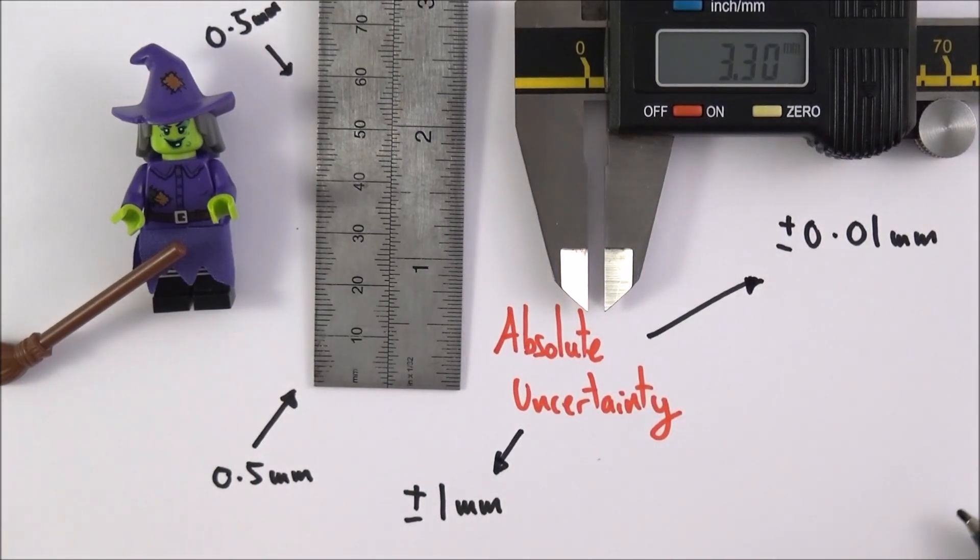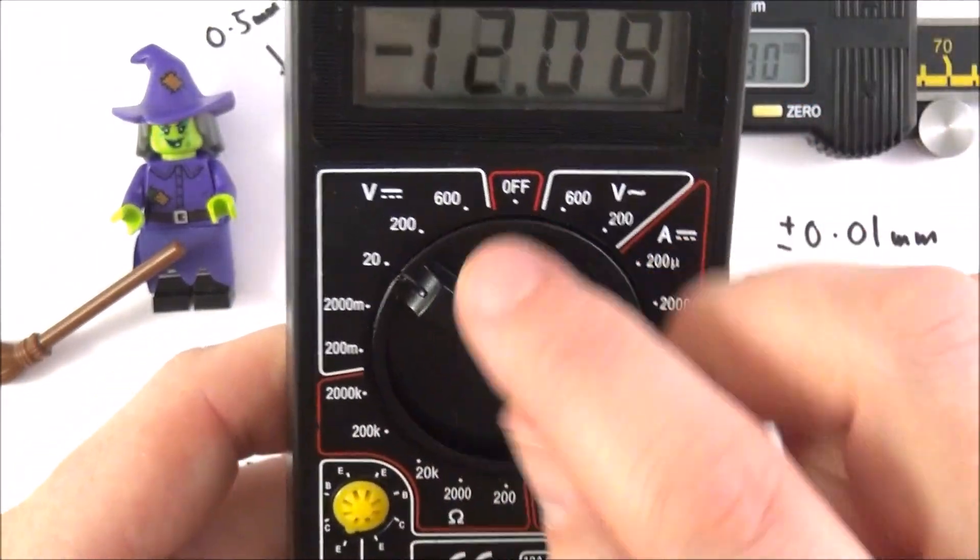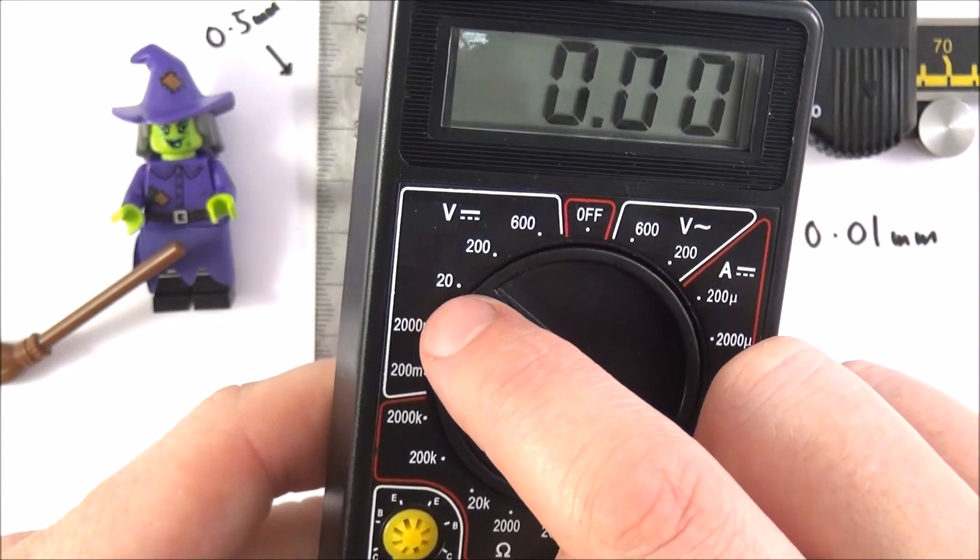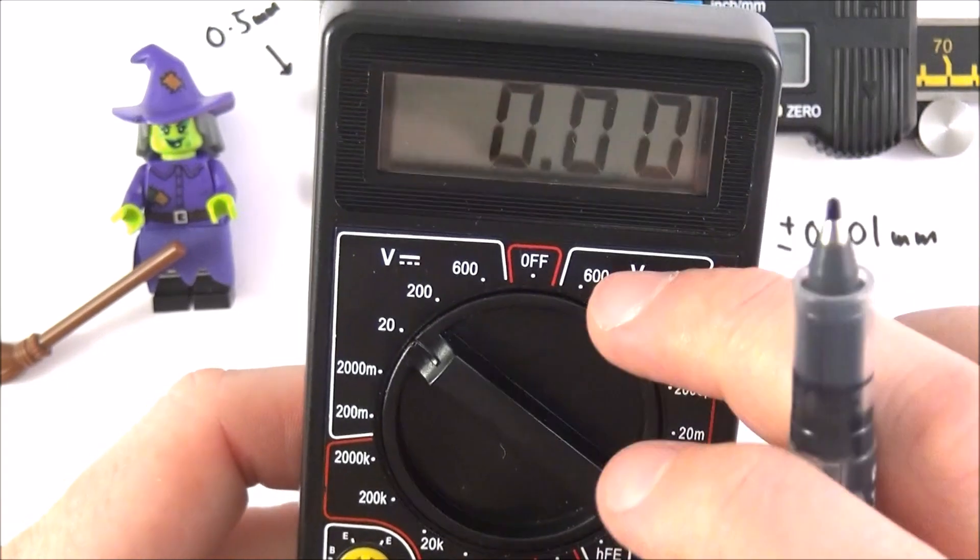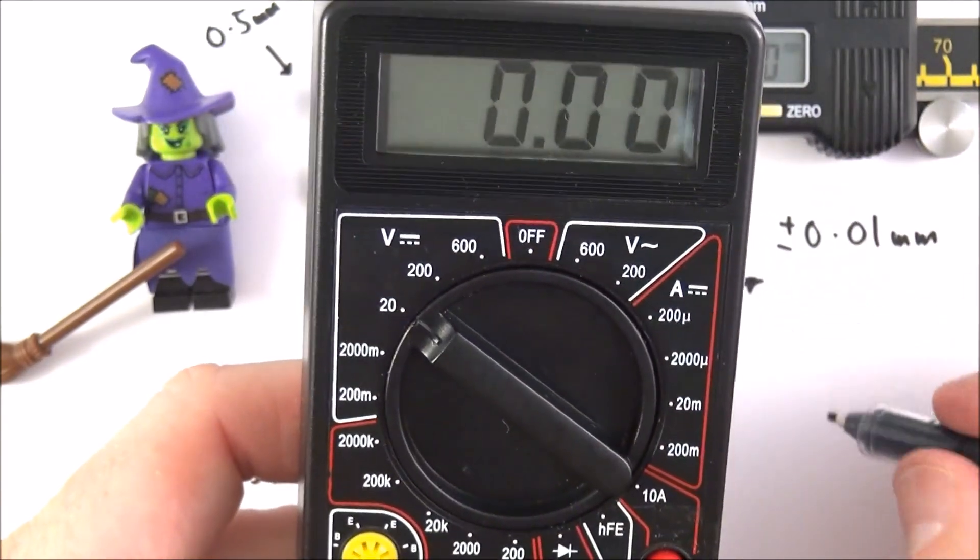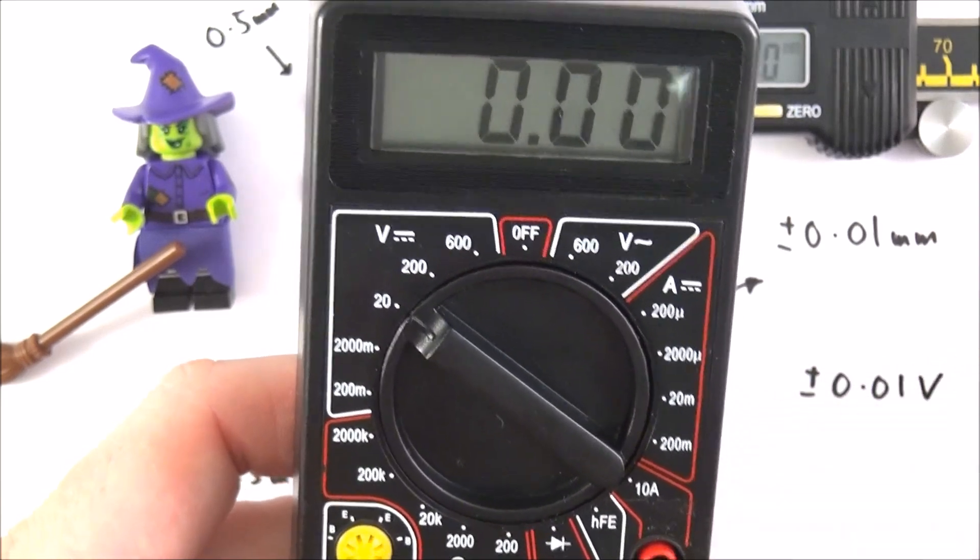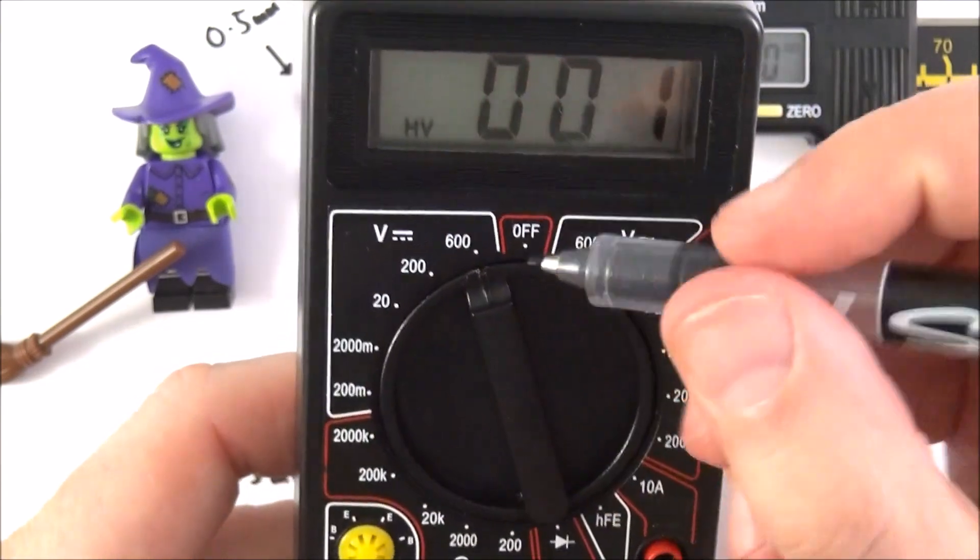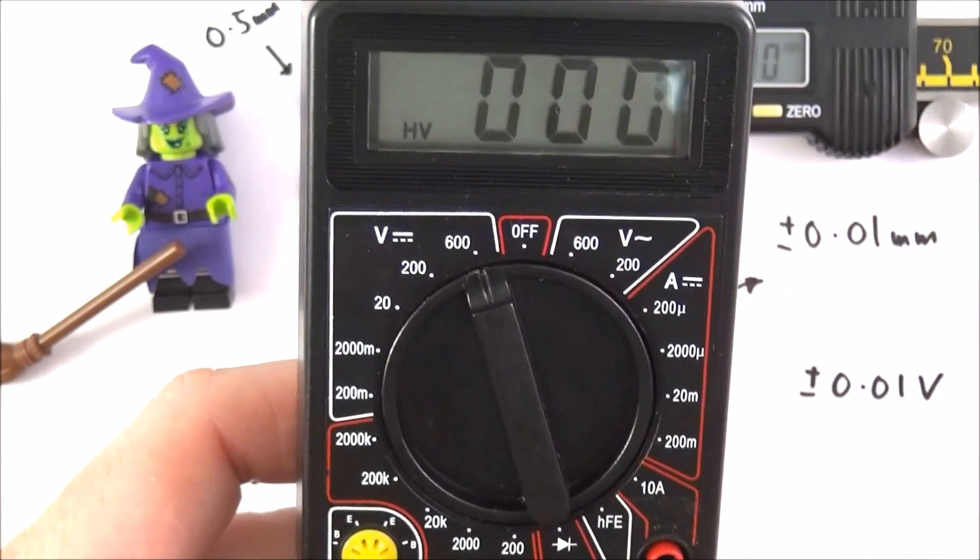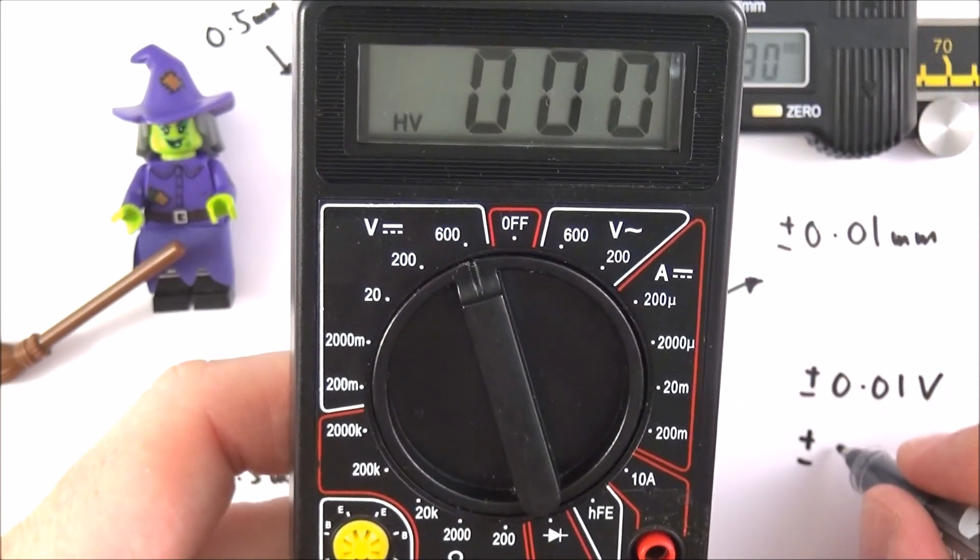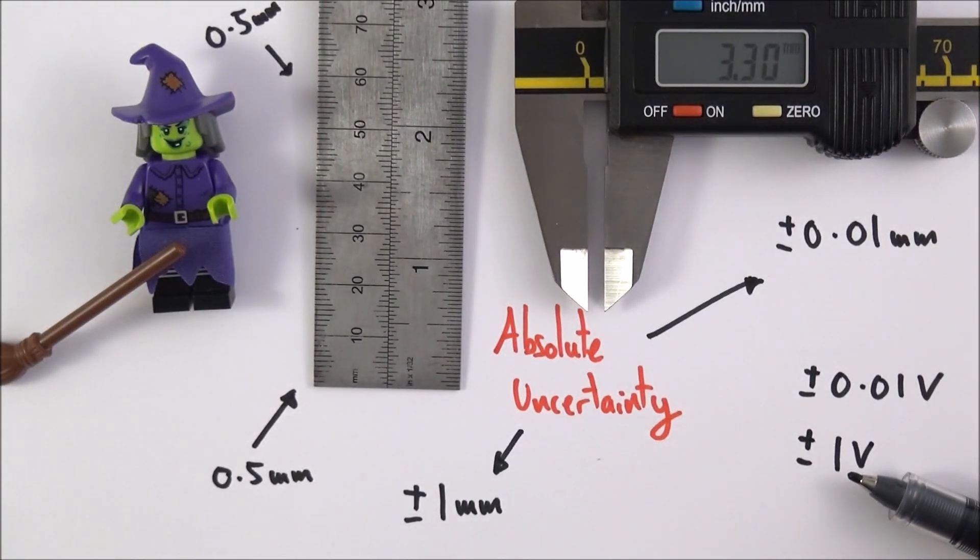When it comes to things which are digital, perhaps like this multimeter here, if we set the scale to read up to 20 volts, we can see it goes 0.00. For this, when it's on a scale of up to 20 volts, the absolute uncertainty is going to be plus or minus 0.01 of a volt. When we change it up to a scale of up to 600 volts, suddenly that decimal point shifts along and now we have an absolute uncertainty of one volt. So this is the absolute uncertainty in our measured quantity.